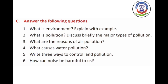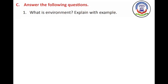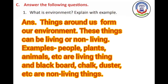Question C: Answer the following questions. Number 1 — what is environment? Explain with an example. The answer is: things around us form our environment. These things can be living or non-living. Examples of living things: people, plants, animals. Examples of non-living things: blackboard, chalk, duster, bench, chair, table — these cannot move on their own or breathe.